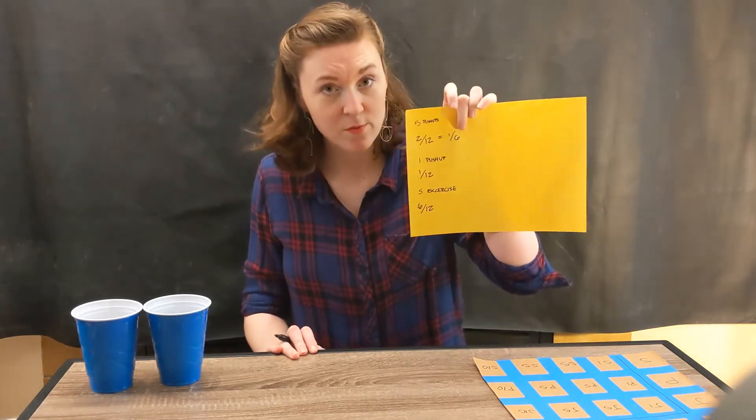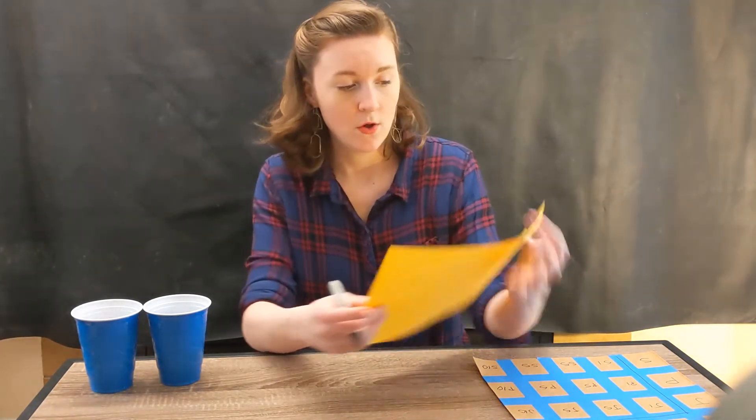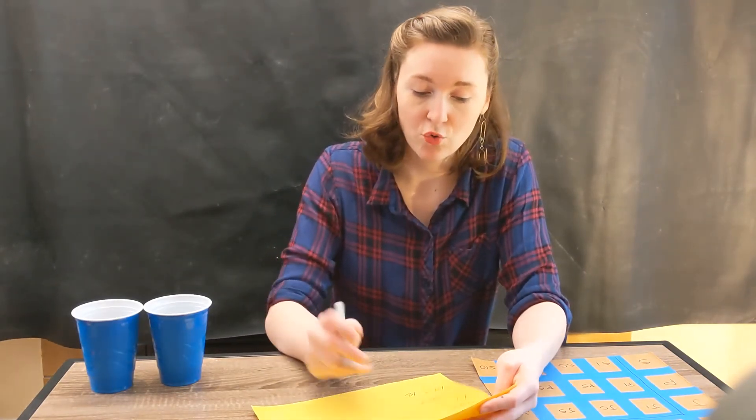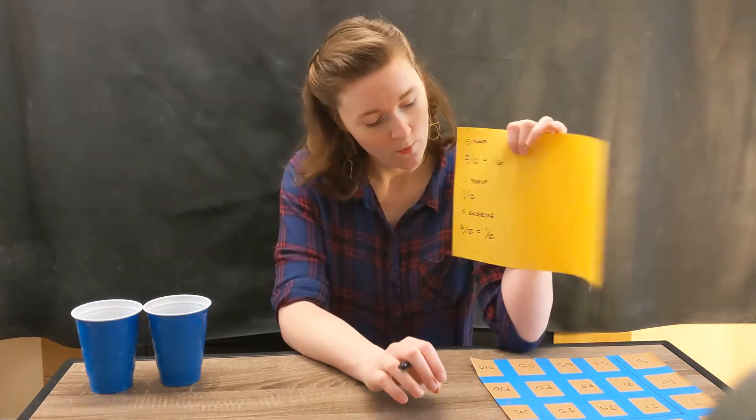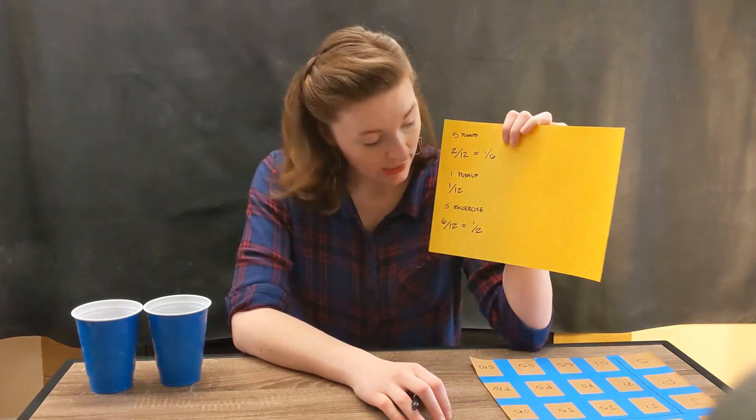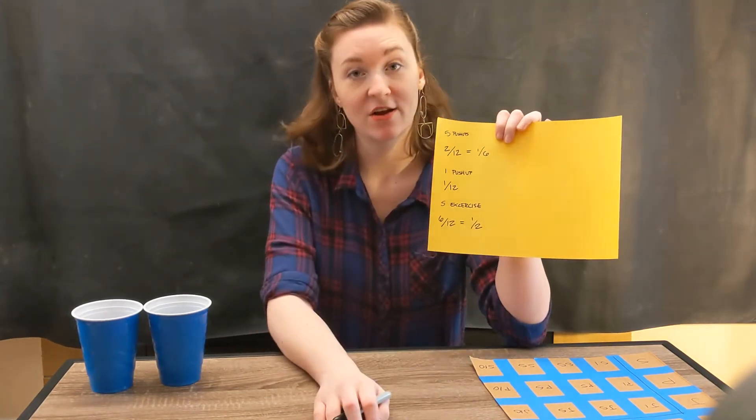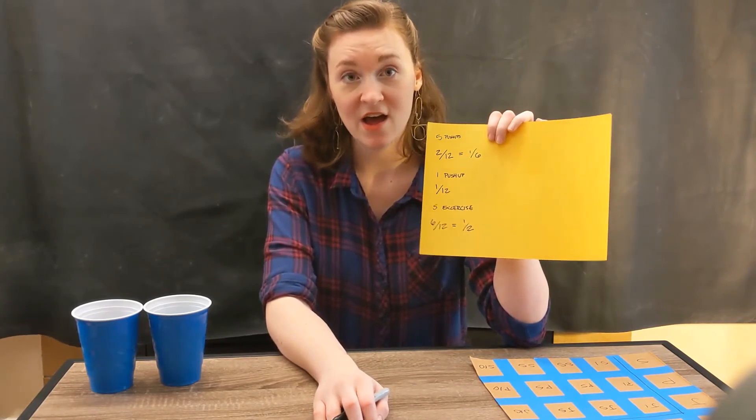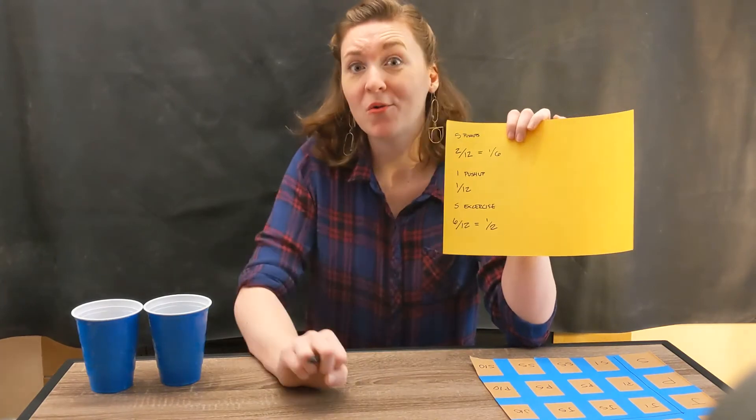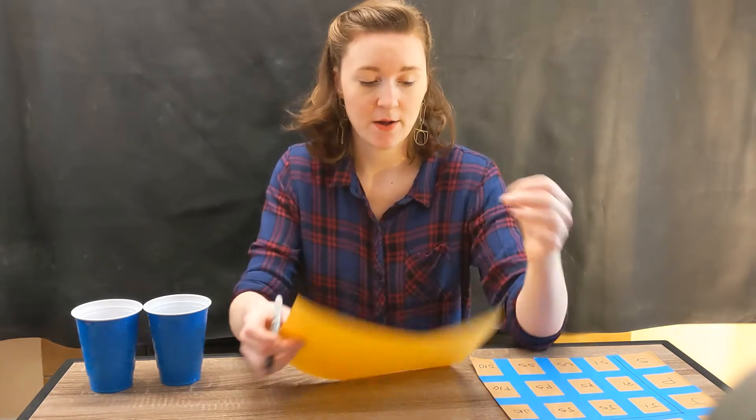And is twelve divisible by six? I think so. We talked about that earlier. So that's going to be a one in two chance. Six over twelve is the same as one over two. And that's the likelihood we had when we were flipping our coin, right? So there's a 50% chance that you're going to have to do an exercise five times. So I guess it makes sense that for the first one we pulled out, we had to do five exercises because that was a pretty likely outcome.